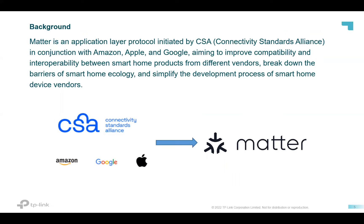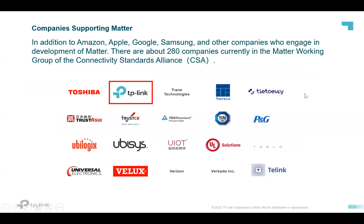Matter is an application layer protocol initiated by CSA, the Connectivity Standards Alliance, in conjunction with Amazon, Apple, Google, and Samsung, aiming to improve compatibility and interoperability between smart home products from different vendors, break down the barriers of the smart home ecology, and simplify the development process for smart home device vendors. As of January this year, there are about 280 companies currently in the Matter working group of the Connectivity Standards Alliance.